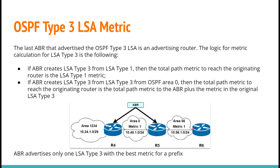Let's say again: R6 creates LSA Type 1 with metric 1. R5 creates LSA Type 3 from LSA Type 1 with metric 1 and sends it to area 0. R4 receives this LSA Type 3 and creates a new LSA Type 3, listing itself as the originating router. The metric for this LSA is metric 1 from LSA Type 3 from R5 plus metric 1 from area 0. Additionally, an ABR advertises only one LSA Type 3 with the best metric for a prefix — if there are multiple paths, only the LSA Type 3 with the best metric is advertised.